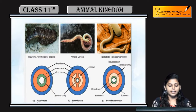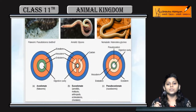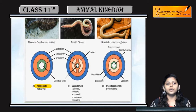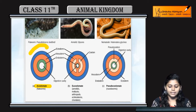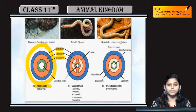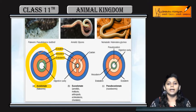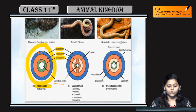Coelom is present within the mesodermal lining. If coelom is absent, those are acoelomates. In this first diagram you can see ectoderm, mesoderm, and endoderm — the green one is endoderm, the reddish one is mesoderm, and the blue one is ectoderm — and in the middle is the digestive cavity. So in the first diagram, coelom is absent.